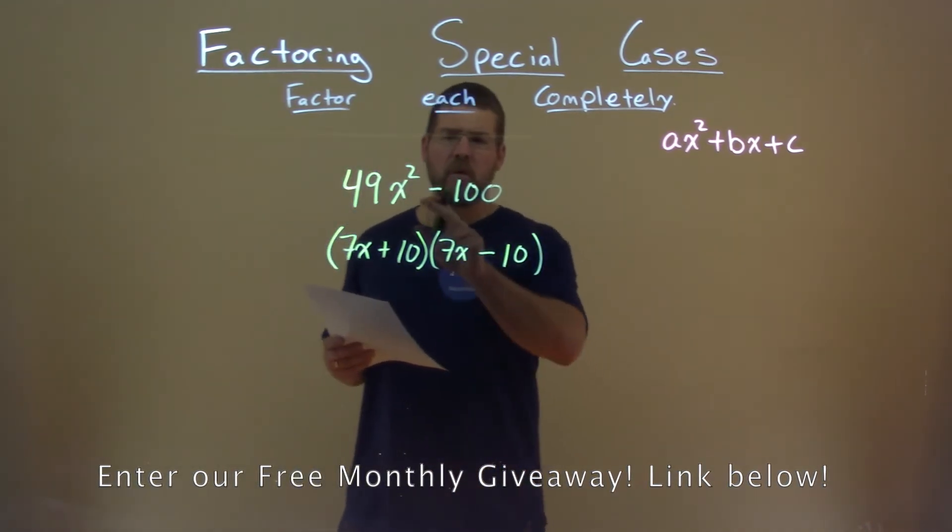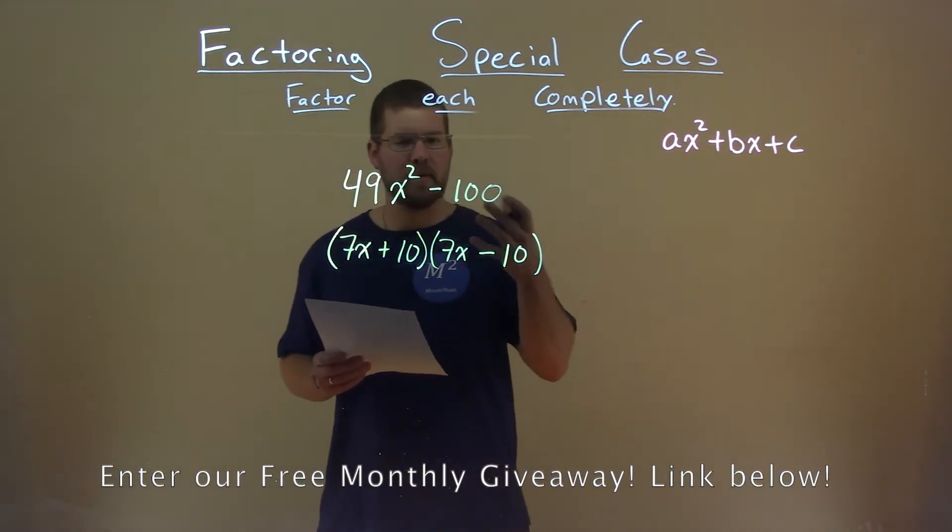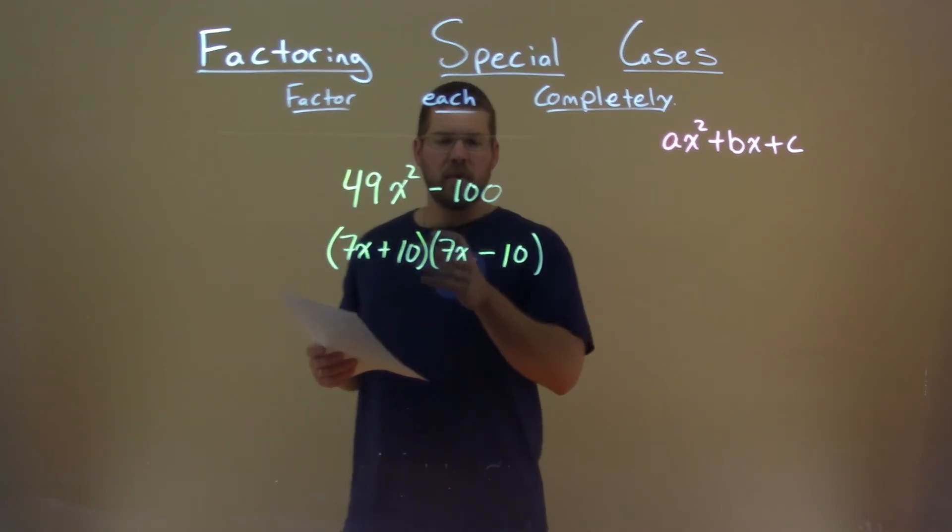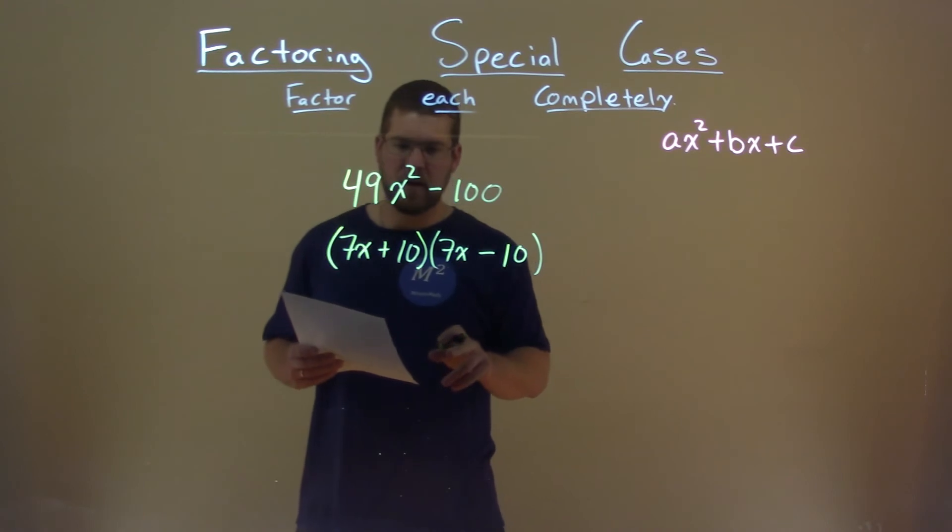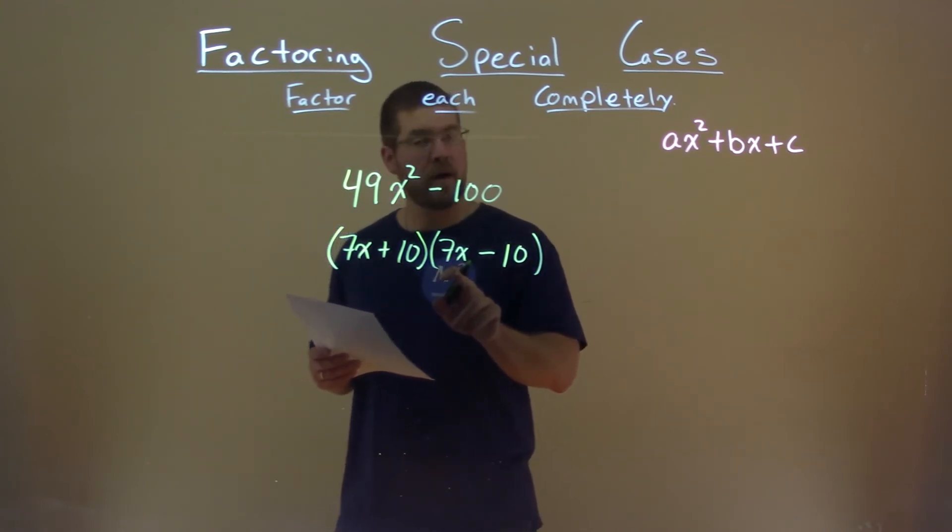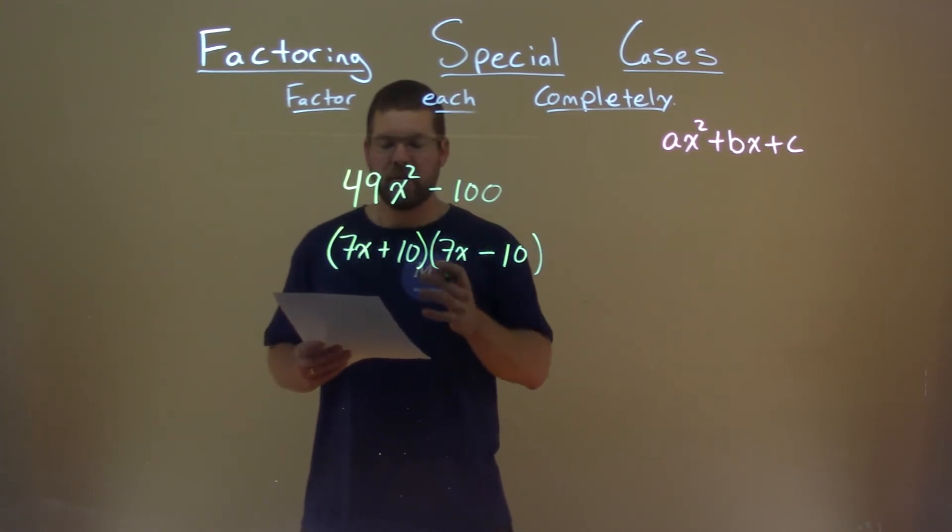We're almost there. Well they have no b value here, b is 0. But notice the way we have it set up here, 7x times a negative 10 is a negative 70x. 10 times 7x is a positive 70x. Add them together, we get 0.